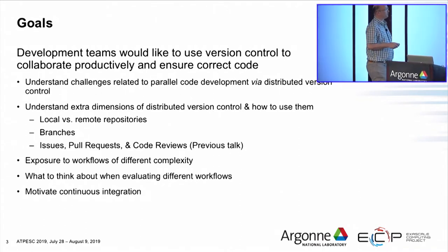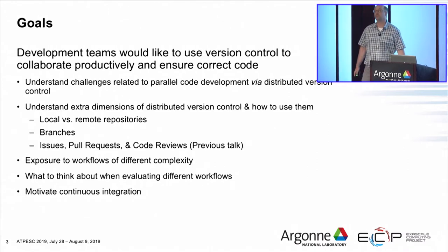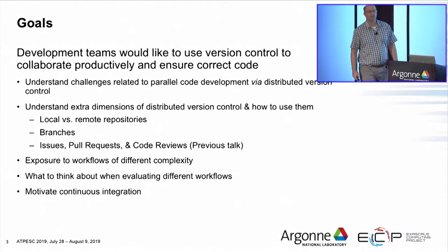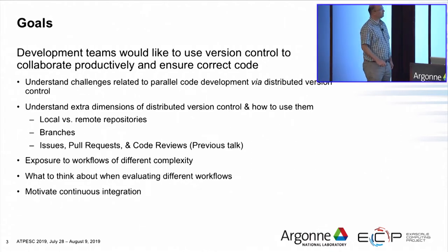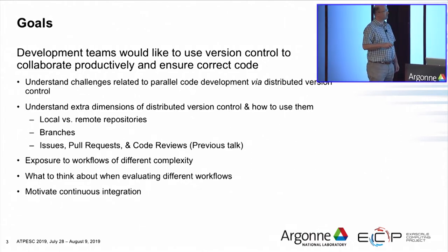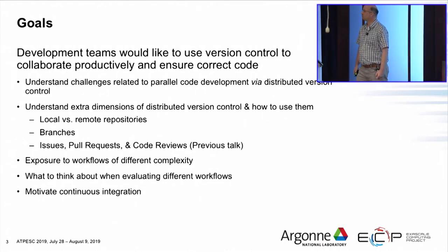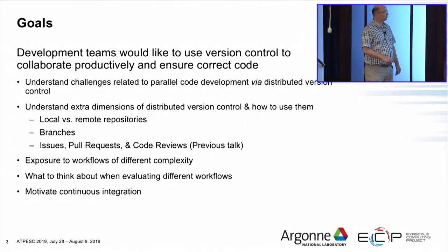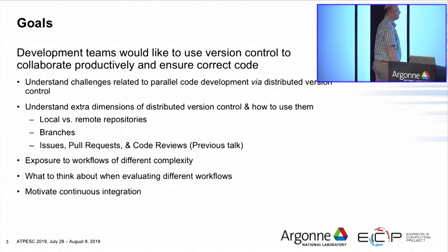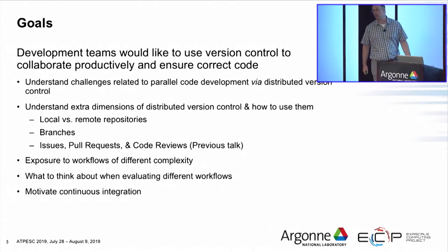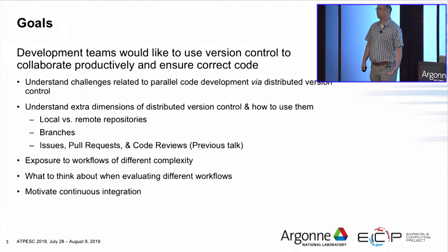We're going to look at this by considering the extra dimensions that exist in certain version control systems and see how we can best use those to meet our goals. One extra dimension is really leveraging the notion of local versus remote repositories. Another is branches. A third dimension is that if you're using a version control host like GitHub, you have access to issues, pull requests, and code reviews, and you can try to work those into your workflow as well.